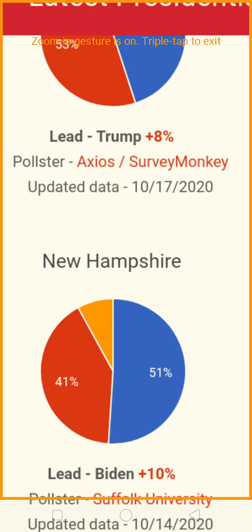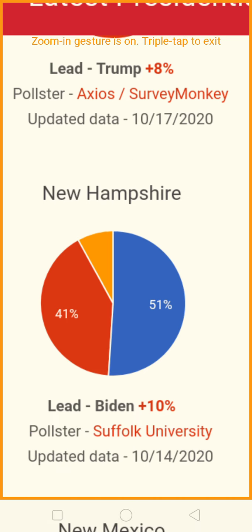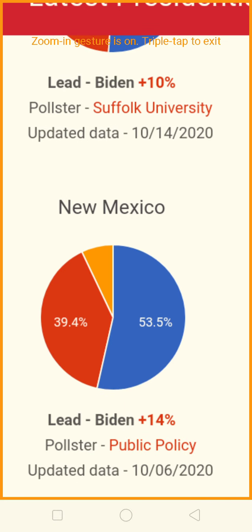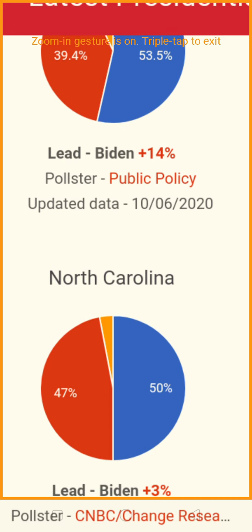New Hampshire is being won by Joe Biden by a count of 51% to 41% — that's a safe lead. Trump is not going to overcome that. New Mexico is being won by Joe Biden by a count of 53.5% to 39.4% — a whopping 14% lead. You can put that in the column of safe for Joe Biden.